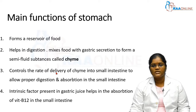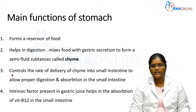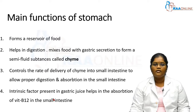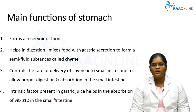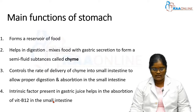The rate of delivery of chyme is controlled by a sphincter at the lower end of the stomach called the pyloric sphincter. The stomach also secretes intrinsic factor, present in the gastric juice, which helps in the absorption of vitamin B12 in the small intestine.